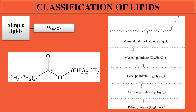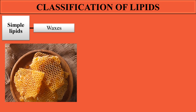There are different forms of waxes available, and different derivatives derived from waxes. In the general formula, the number of carbon and hydrogen atoms may vary for different forms of waxes. They are different from each other because of the number of carbon and hydrogen atoms present.